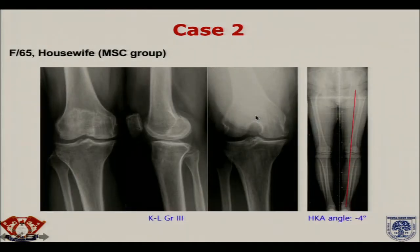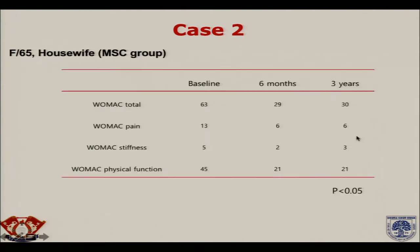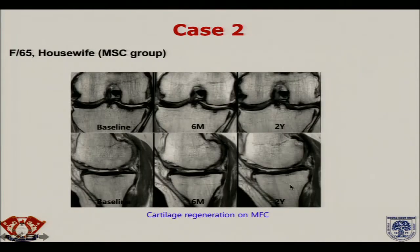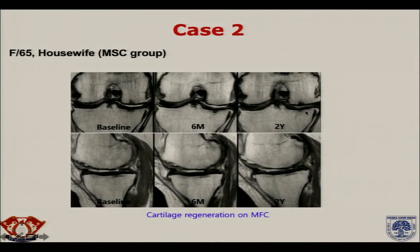Another case: a 65-year-old housewife with definite osteophyte and joint space narrowing on the medial side, with approximately 4-degree varus. We injected mesenchymal stem cells. Up to 3 years, WOMAC scores improved significantly. The MRI at baseline and 6-month follow-up shows almost similar findings, but at the 2-year MRI, the defect thickness is quite decreased and the femoral cartilage on the medial side is somewhat increased. The sagittal view showed a similar finding.